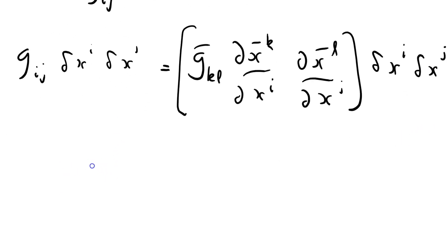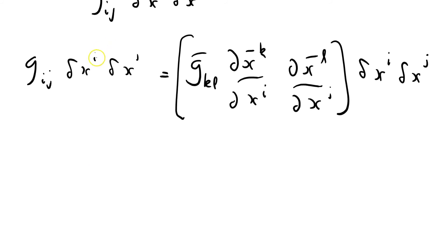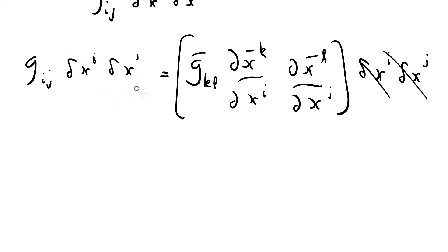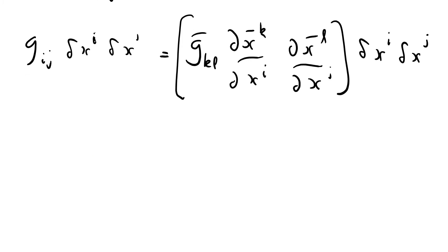Now at this point you might say: we can just cancel δxⁱ and δxʲ — not so fast. You can't just cancel them because it's summed over i and j. It's easy to forget this when writing down equations — both the left and right are summed over i and j, and cunningly it's the same summation on either side.